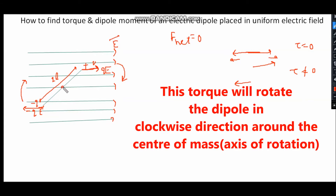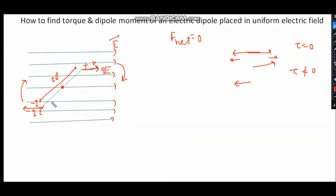Let us consider this is the centre of the dipole — we can say centre of mass. So this lower length is L and the upper half length is also L. Let us draw a perpendicular from this point; this is the perpendicular distance, because we know that torque is equal to force into perpendicular distance. So we will find torque for both forces.